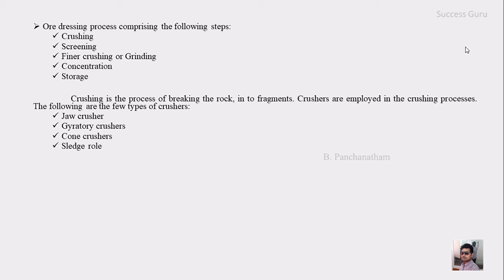Let us take a look at crushing. Crushing is the process of breaking rock into fragments, and crushers are employed for this process. There are a few types of crushers: the first one is the jaw crusher, then the gyratory crusher, followed by a cone crusher, then the sledge roll, then the hammer mill, then the stamps, etc. These are the few types of crushers used till date.